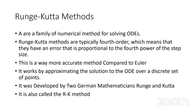Unlike Euler's method, which is a single formula, Runge-Kutta methods are a family of numerical methods for solving different types of ODEs. There is a large family comprising several methods, with ongoing research. It is far more accurate than Euler's method, working by approximating the solution of the ODE over a discrete set of points. It was developed by two German mathematicians, Runge and Kutta, and is also called the Heun method.